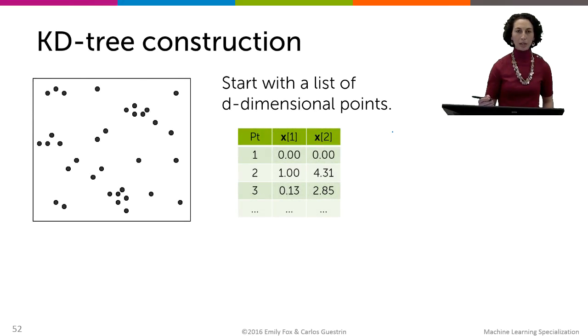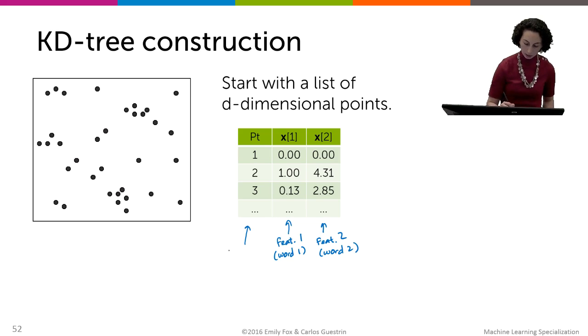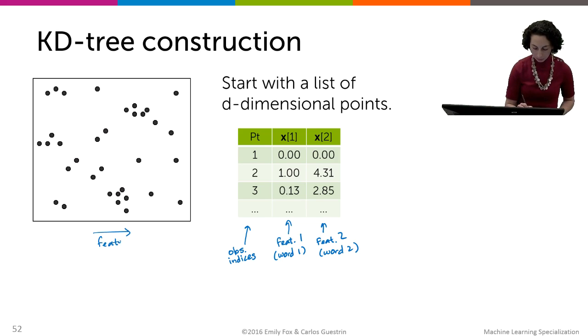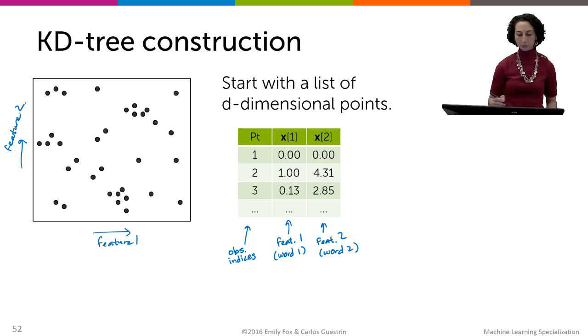To start with, let's talk about the KD tree construction. So what we're going to do is we're going to take our data table. We have in this example just two different features. So we have feature one and this is feature two. So maybe this is just the first word in our vocabulary and this is the second word. And then here are the indices of our data points. And these points are displayed just in R2 here. So this is feature one and this is feature two.